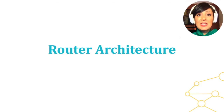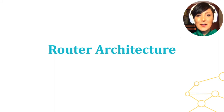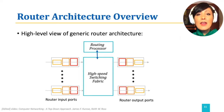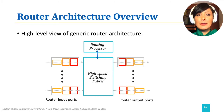Let's start with examining the general architecture of a router before we jump into the details of routing and forwarding functions. A high-level view of a router architecture is depicted in this picture. Let's explore the four main components we observe here.